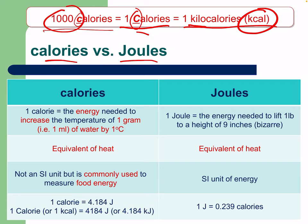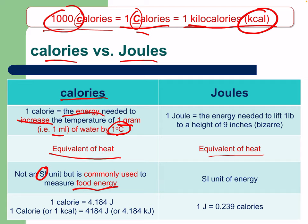Calories versus joules: one calorie is the energy needed to increase the temperature of one gram — i.e., one milliliter — of water by one degree. Calories have an equivalent to heat, same with joules. Calories are not a standard international unit but are commonly used to measure food energy, as you've likely seen on food labels. One calorie is 4.184 joules, and one uppercase Calorie (kcal) is 4,184 joules.